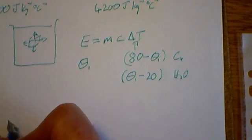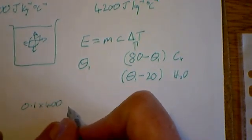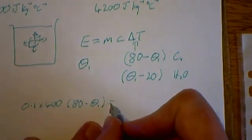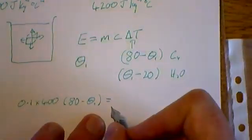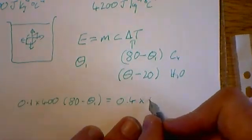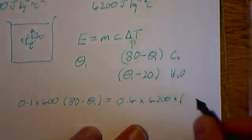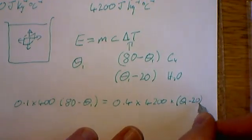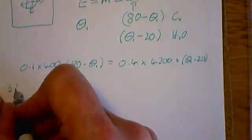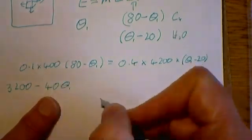We say the energy that the copper loses, so that's the mass, 0.1, multiplied by the specific heat capacity, that's 400, multiplied by the temperature change, which in this instance is 80 take away theta one, equals 0.4 times 4200 times theta one take away 20. If we multiply these out, we get 3200 take away 40 theta one.